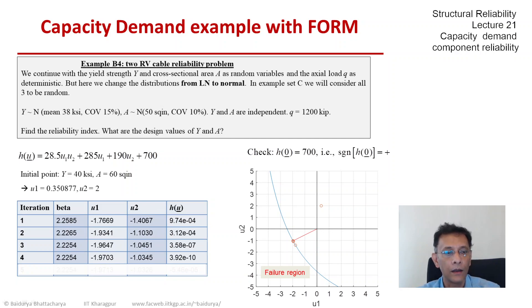The next iteration. U1 moves a little further away. U2 moves a little closer. Beta is practically unchanged. And the functional value is very close to 0. And now we have converged. All tolerances have been met. So the answer is beta is 2.225. And the U1 and U2 star values give us the physical variables at the design point as 26.8 KSI for yield and 44.8 square inch for area.